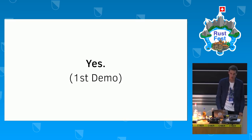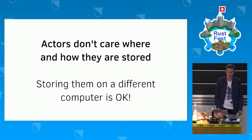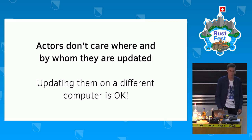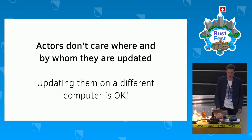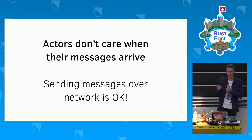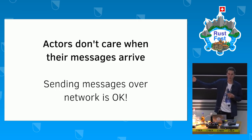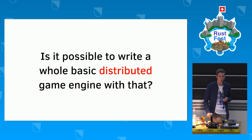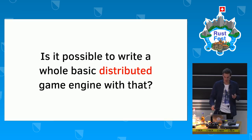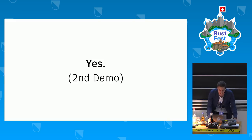Now let's come back to those freedoms I mentioned and really think them to the logical conclusion. Actors don't care where and how they are stored, so storing them on a different computer is okay. They don't care where and by whom they are updated, so updating them on a different computer is okay. Since everything is asynchronous and actors don't really care when exactly their messages arrive, sending messages over the network is actually also okay. At this point you have to ask: is it actually possible to write a distributed game engine based on that? The answer seems to be yes.